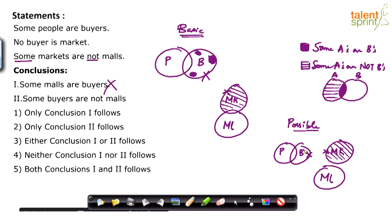Some buyers are not malls also satisfies possible diagram one — I can say these buyers are not malls, or these buyers are not malls. Don't get confused thinking all buyers are not malls; I can always choose some of these buyers and say these are not malls. So some buyers are not malls satisfies both the basic diagram and possible diagram one. But you have to ensure it satisfies all possible diagrams, so let me draw a possible diagram two.